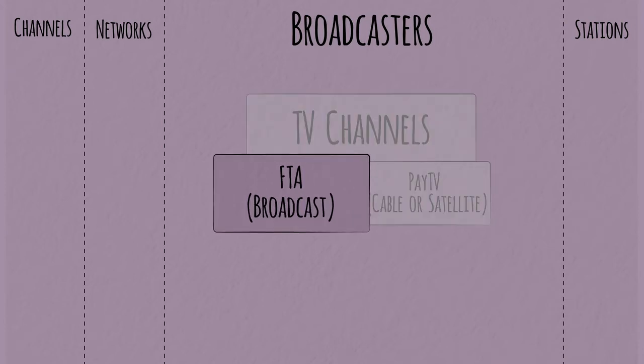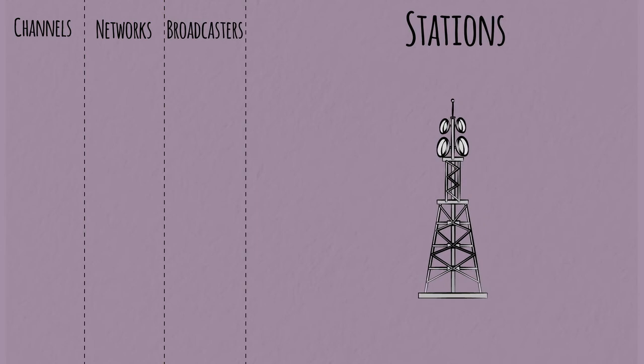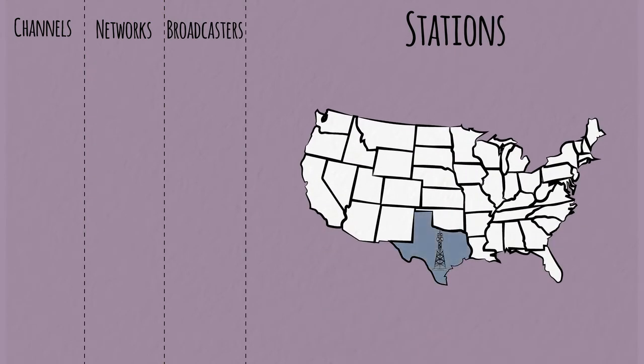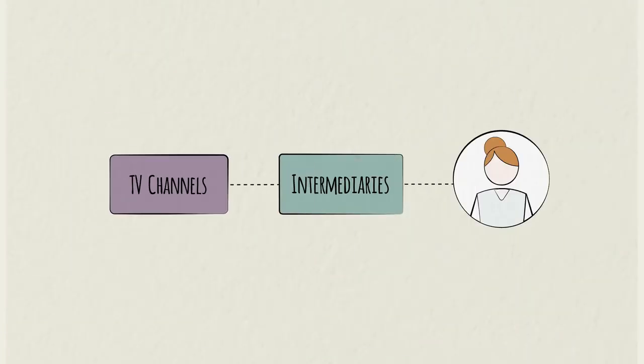The channels provided can be paid or free to air. Networks who provide free to air channels are known as broadcasters, such as NBC in the US or BBC in the UK. TV stations offer one or more channels in small geographic areas, like a city. So who delivers their content directly to consumers? And who are the intermediaries? Here are three common models.